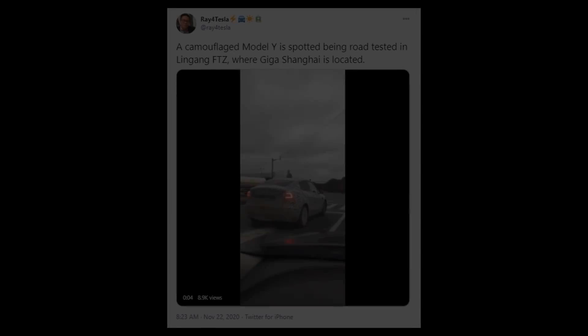There's also several other pieces of data and news that has come out recently that helps support my conclusion. For instance, Ray for Tesla recently posted a video of a camouflaged Model Y on Twitter near Gigafactory Shanghai. And you have to ask yourself, why is Tesla camouflaging a Model Y in China?